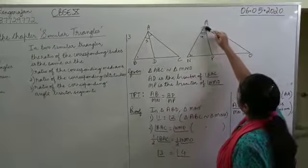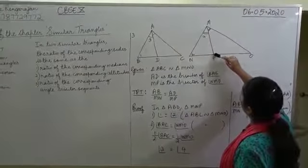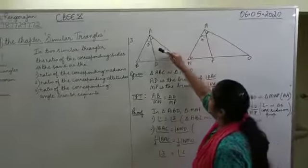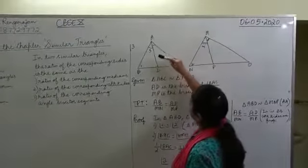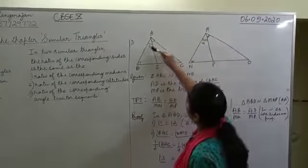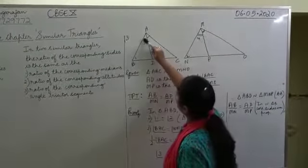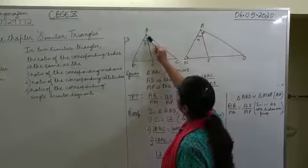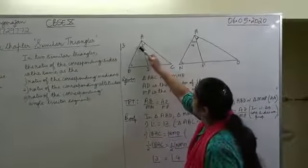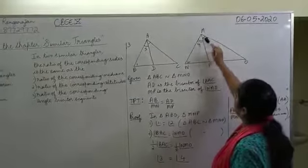So MP, this line segment MP, bisects this whole angle M. And AD, the line segment AD, bisects this whole angle A. This means these angles are divided into two equal halves.